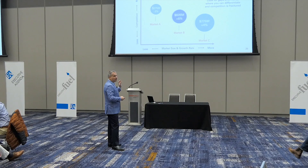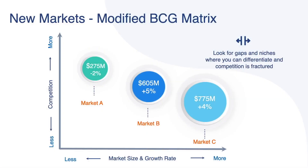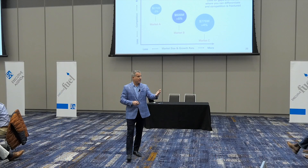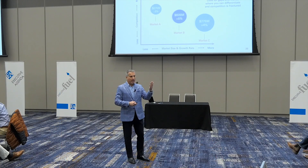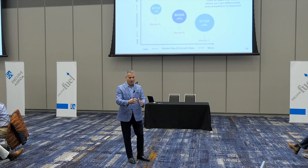How do you evaluate the size and the health of a market? This is kind of the classical way — this is the Boston Consultant Group matrix. You'll see three variables. The vertical axis is the amount of competition in the market. And I'm always asking, is that like public competition or more fractured competition?